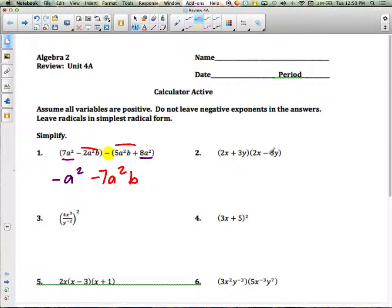The second question, you're just going to multiply these two binomials, so you're going to have to FOIL. So let's go first. It would be 2x times 2x. 2 times 2 is 4. x times x is x squared. So that's your first. Then you'll do the outside. 2x times negative 3y is negative 6xy.